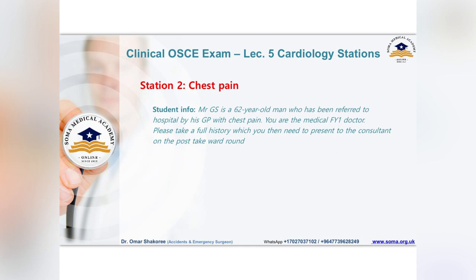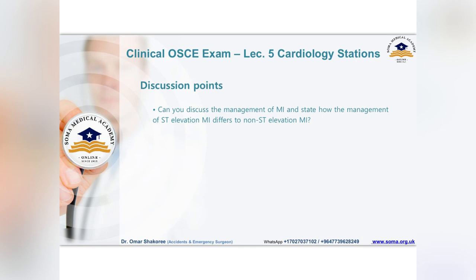The second station of cardiology is the chest pain history. This is a very important station you may face during your exam. A patient presented with chest pain — please take a full history. The main discussion points are regarding myocardial infarction, angina, unstable angina, and acute coronary syndrome. Here you have a 62-year-old patient presenting with chest pain. Discussion points will include management of MI and how ST elevation MI differs from non-ST elevation MI.